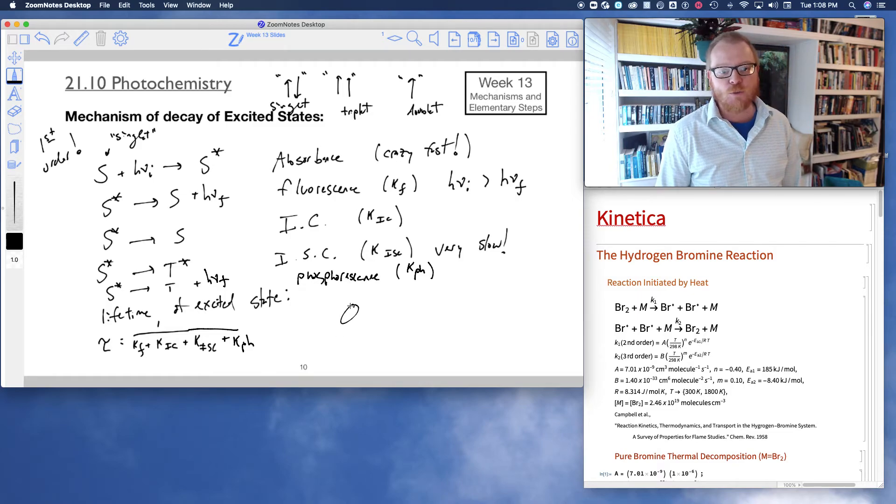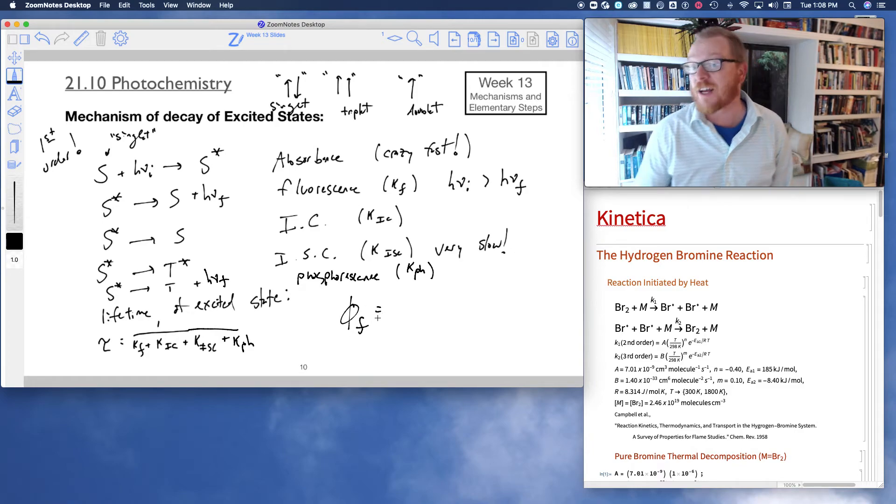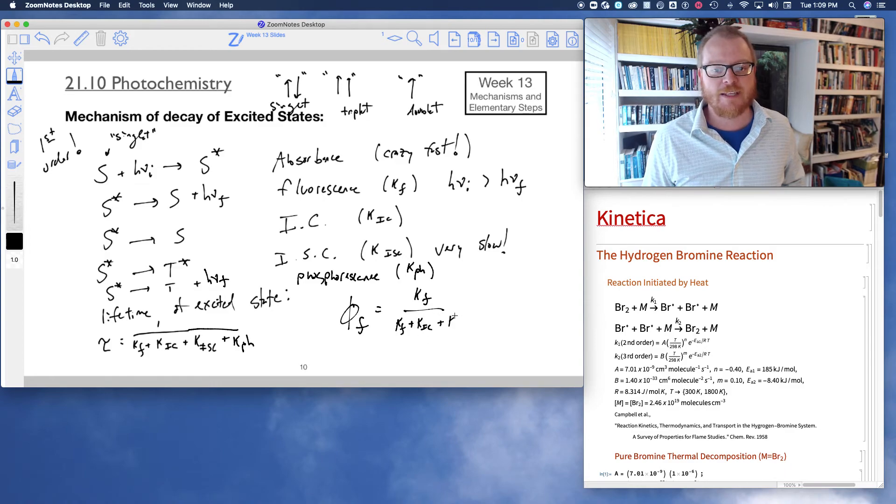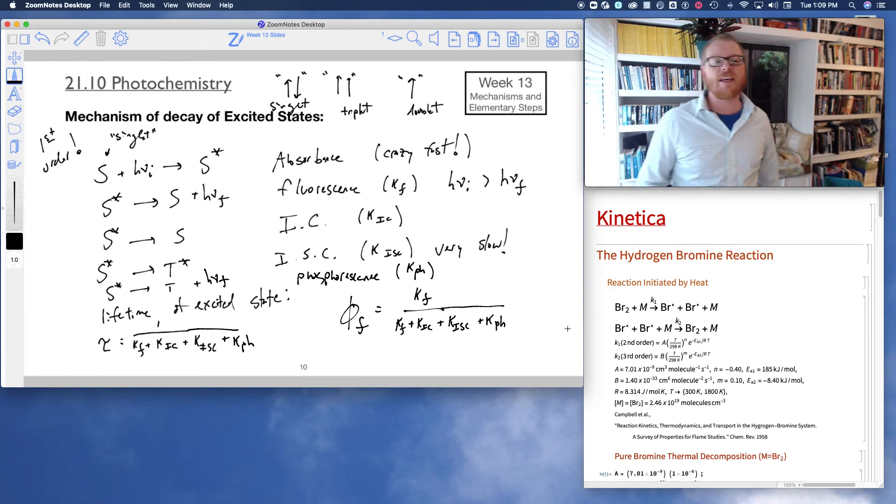And the lifetime of that process would be 1 over all of those rate constants. But for example, suppose we wanted to know the quantum yield of perhaps fluorescence. So then my quantum yield of fluorescence would be K fluorescence divided by K fluorescence plus K internal conversion plus K inter-systems crossing plus K phosphorescence. So we could talk about the quantum yield of any one of these processes by looking at its individual rate constant divided by the total rate constants.